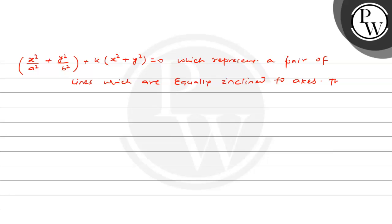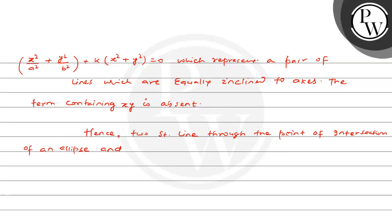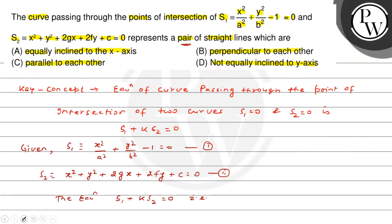The term containing XY is absent. یعنی جو دو straight lines جو ellipse اور circle کے point of intersection سے pass کریں گی وہ x-axis کے ساتھ equal angle بنائیں گی — equally inclined to the axes. Two straight lines through the point of intersection of an ellipse and any circle make equal angles with the x-axis, that is equally inclined to the axis. The most appropriate option is Option A: equally inclined to the axis. Option A is the right answer.